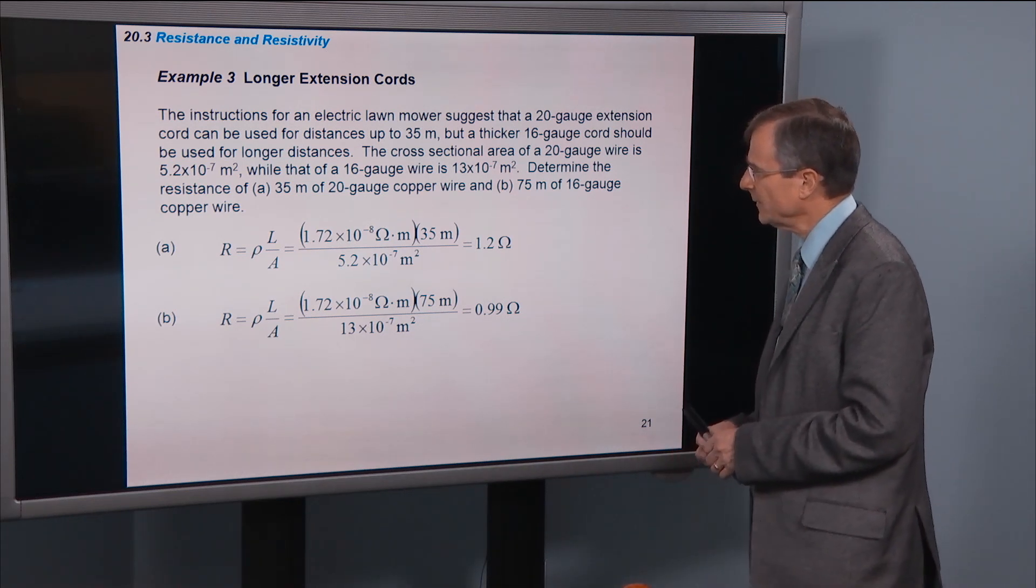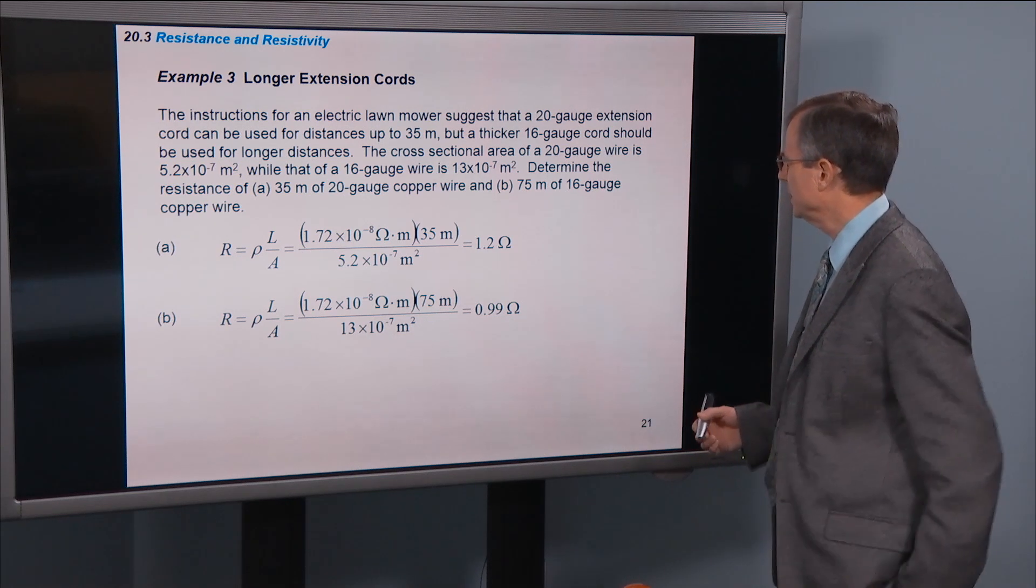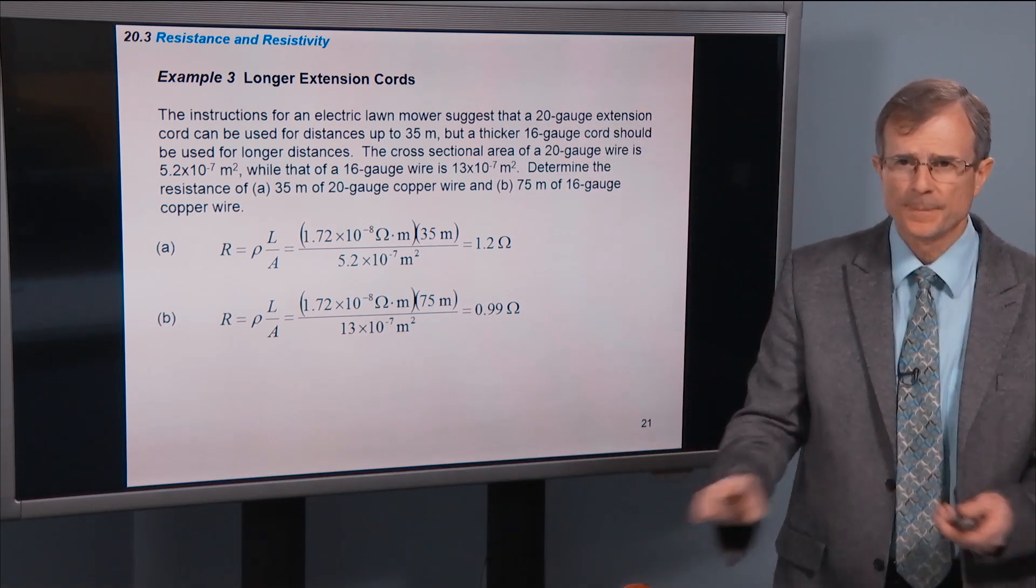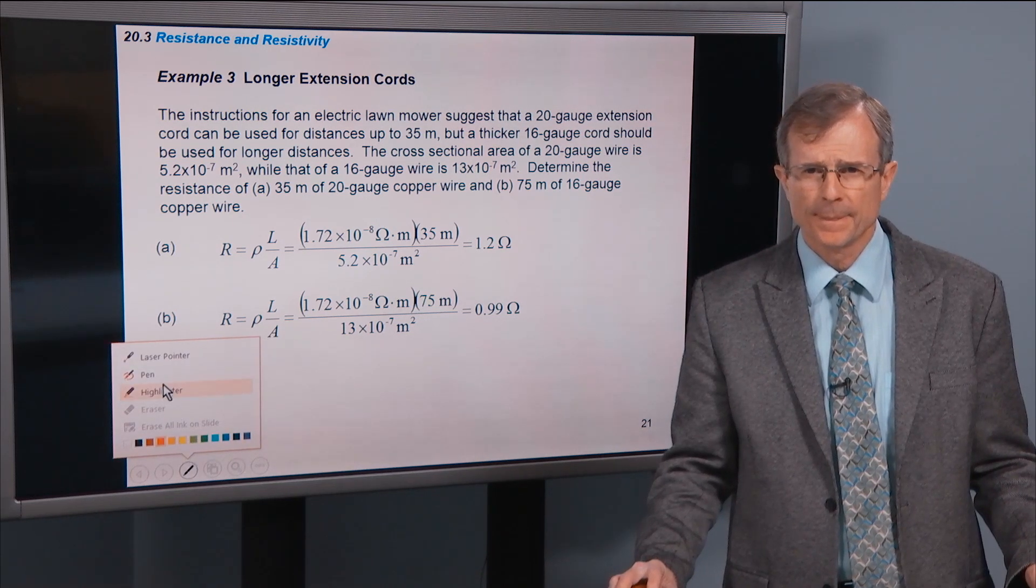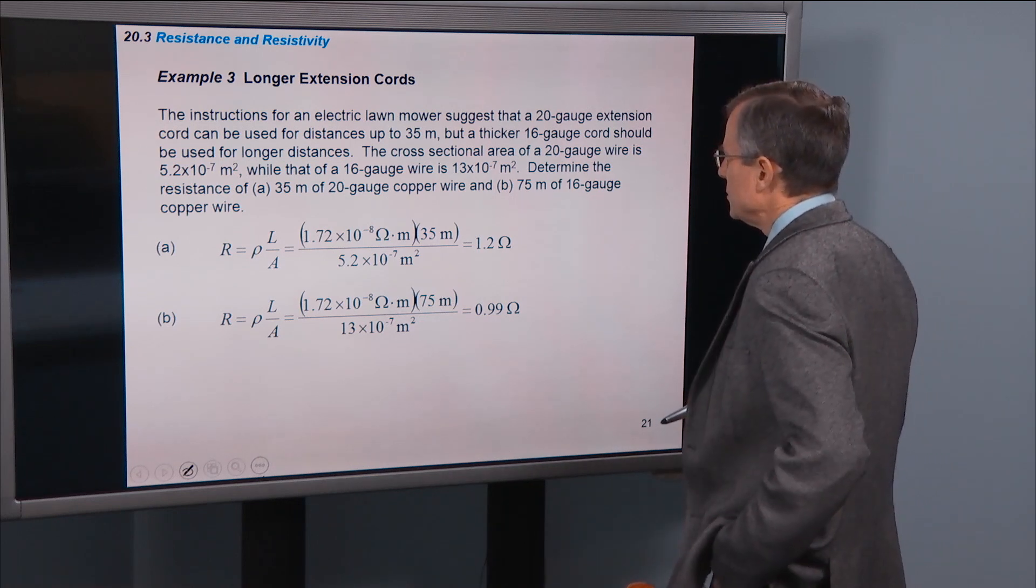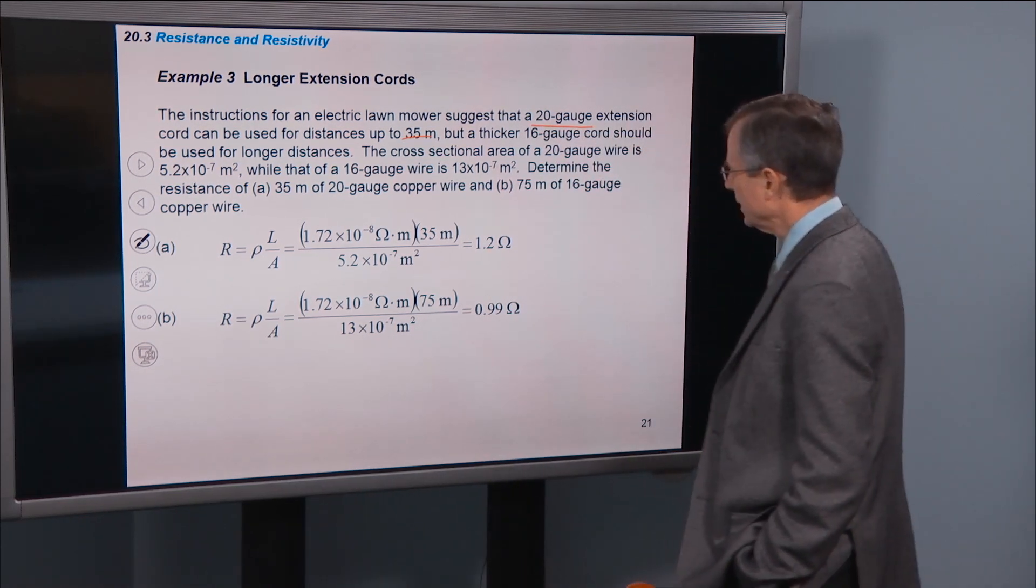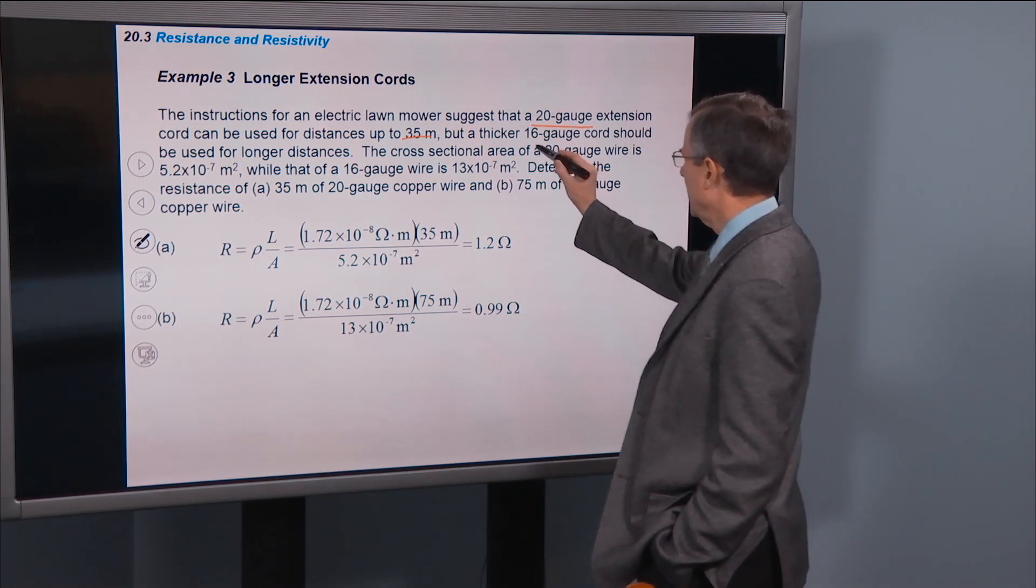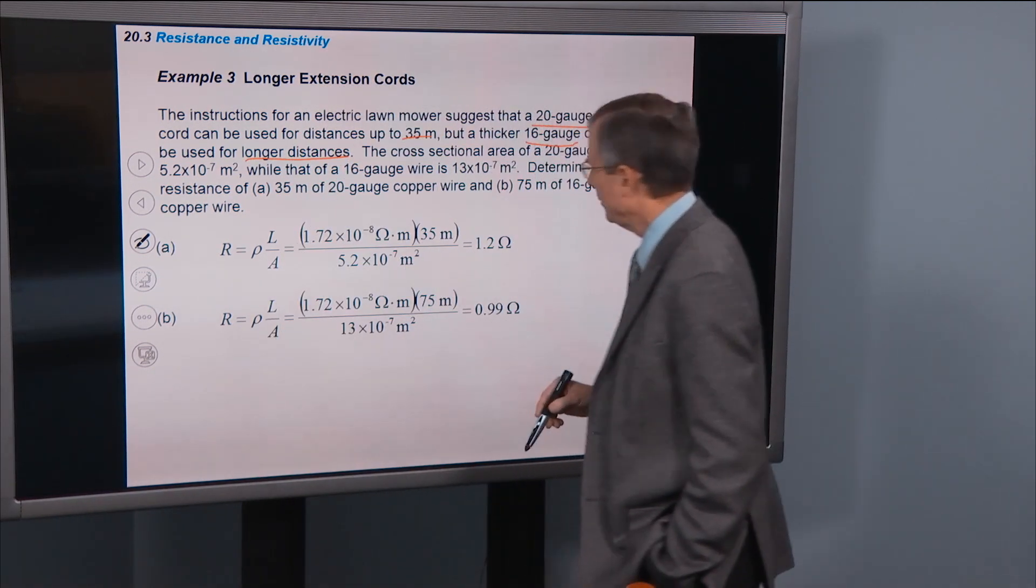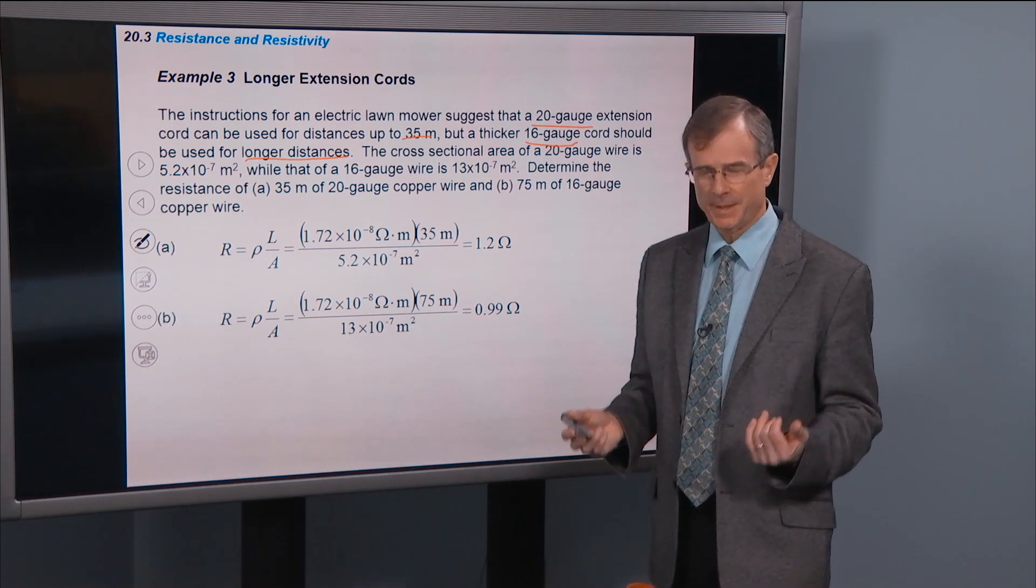Okay, an example. Instructions for electric lawn mower suggest that a 20 gauge extension cord can be used for distances up to 35 meters. So 20 gauge. But a thicker 16 gauge cord can be used for longer distances. And you're saying, well hang on just a second, 16 gauge is thicker? The answer is yes.